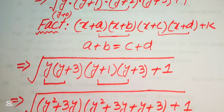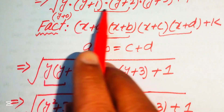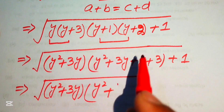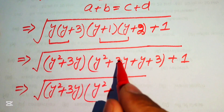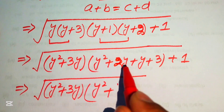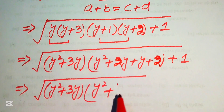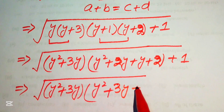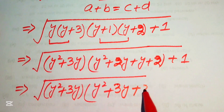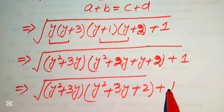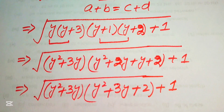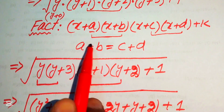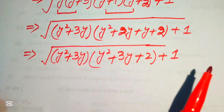We note a small correction: the second pair is y plus 1 and y plus 2, not y plus 3. So multiplying gives 2y plus y equals 3y and plus 2. This confirms the two products are y² + 3y and y² + 3y + 2.